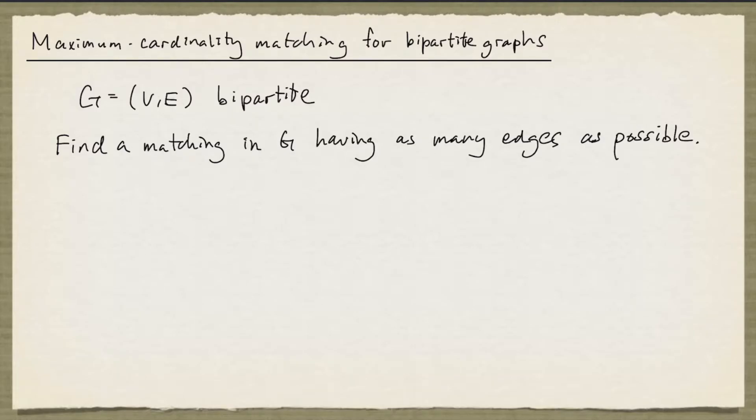We're going to look at the maximum cardinality matching problem for bipartite graphs. So say G is a bipartite graph, the problem is to find a matching in G having as many edges as possible.